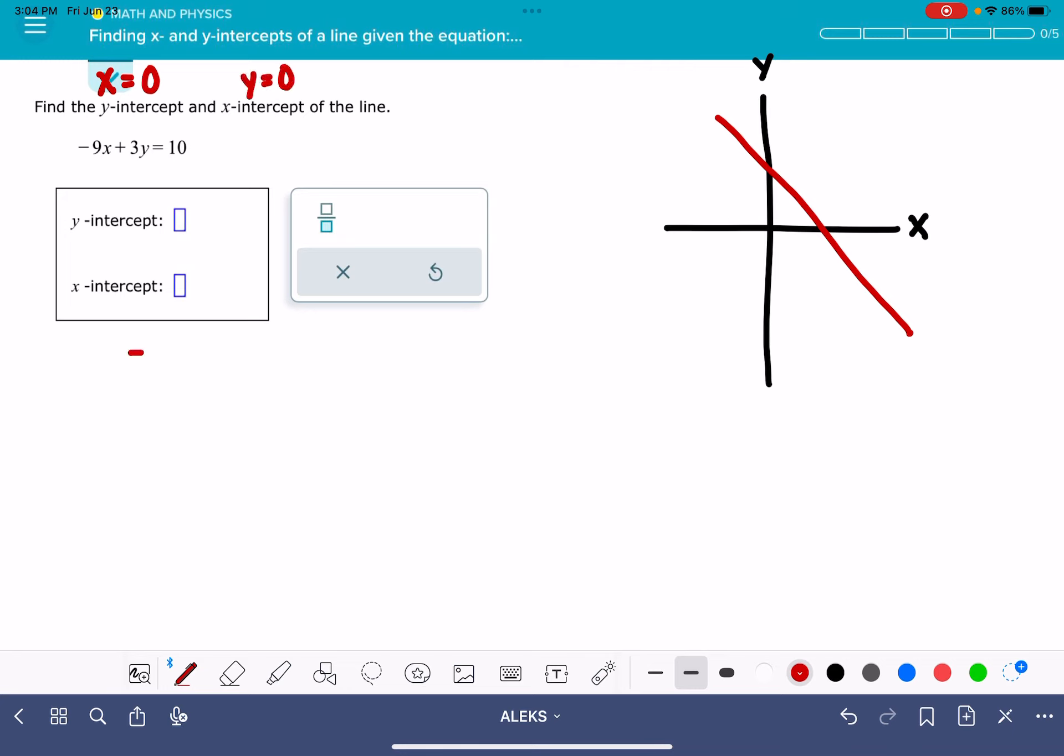So with that information, we're going to take this equation, -9x + 3y = 10. To solve for the y-intercept first, I know at that place the value of x equals zero.